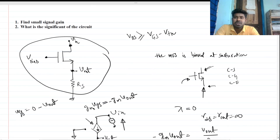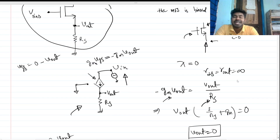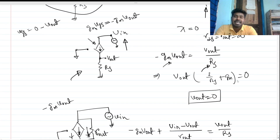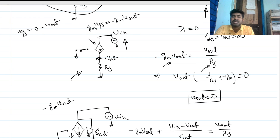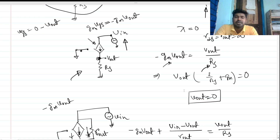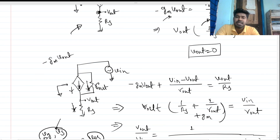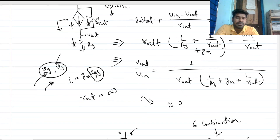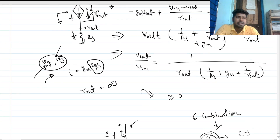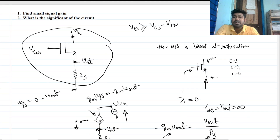You can also apply a voltage at the drain and take output from another node, but you will find there is no significance to the circuit in that configuration either. So we normally use the three standard topologies in real-life circuits. Thank you everyone, please give your valuable feedback.